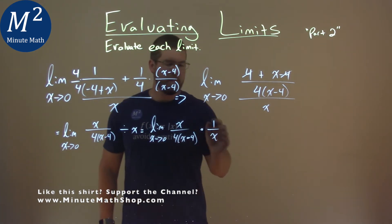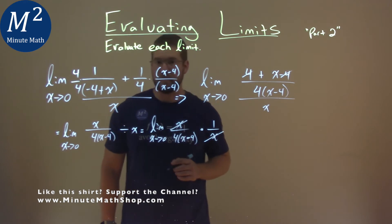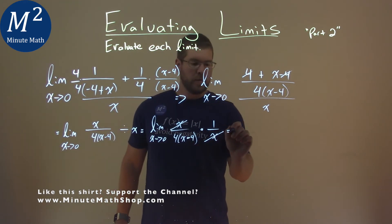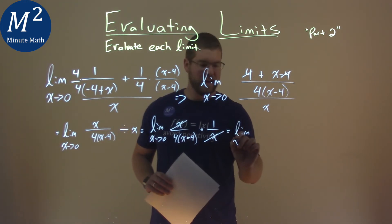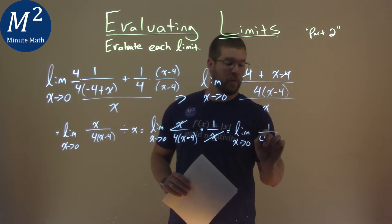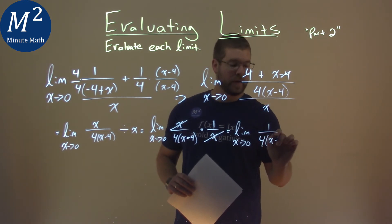Remember, same thing. This makes it easier to see these x's cancel. So we're now left with the limit as x approaches 0 of 1 over 4 times x minus 4.